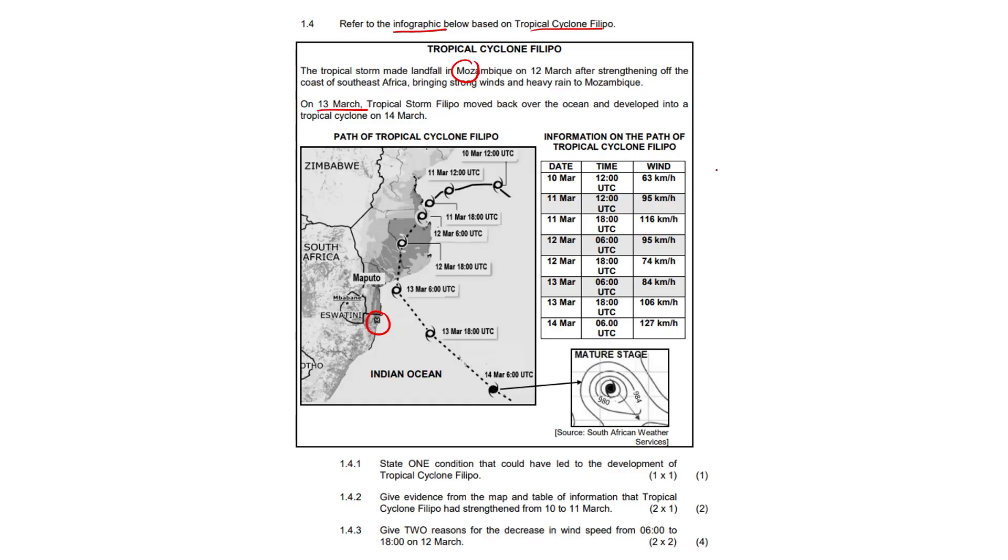So it moved back over the ocean and developed into a tropical cyclone on the 14th of March in and around here, right? And just some information on the path of the tropical cyclone Filippo, it's right here, the maturation stage right at the end.